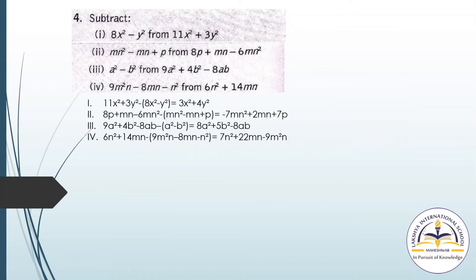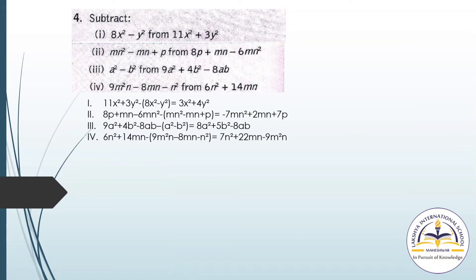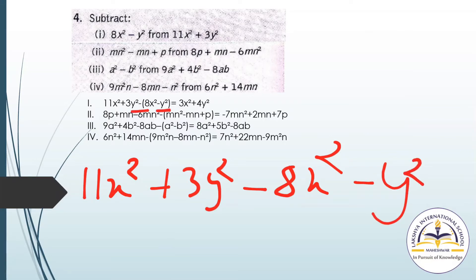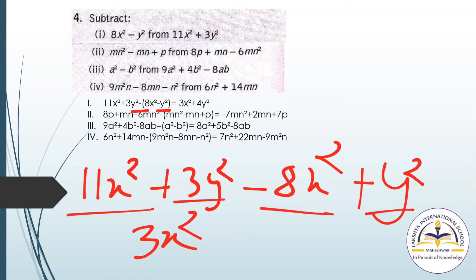Question number 4: Subtract 8x² minus y² from 11x² plus 3y². We write 11x² plus 3y², then minus, because we have to subtract, so minus (8x² minus y²). In the next step: 11x² plus 3y² minus 8x² plus y² — because minus times minus gives plus. So 11 minus 8 is 3x², and 3y² plus 1y² is 4y². The answer is 3x² plus 4y².